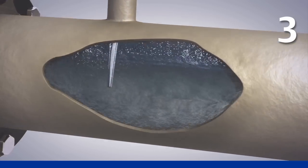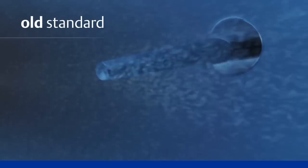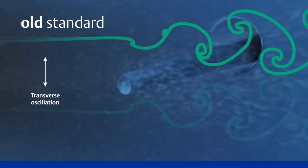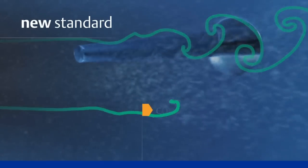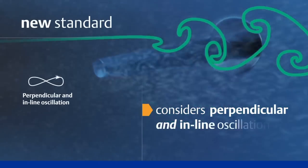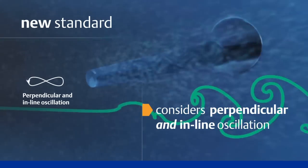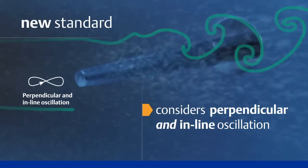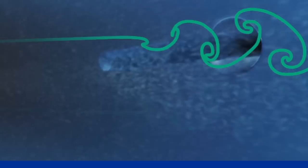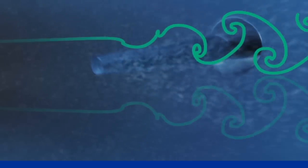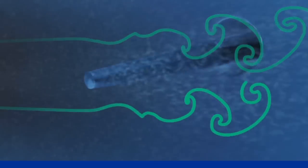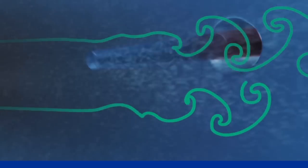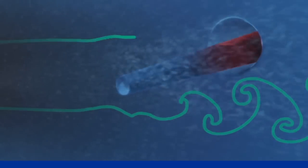Third, the 1974 standard only considered oscillation that is transverse, or perpendicular, to the flow. The new standard considers both perpendicular and inline oscillation. This is important because as a process ramps up, the thermowell goes through the inline vibration resonance first, then the transverse. If the thermowell cannot withstand the inline resonance, it becomes the new limiting factor.